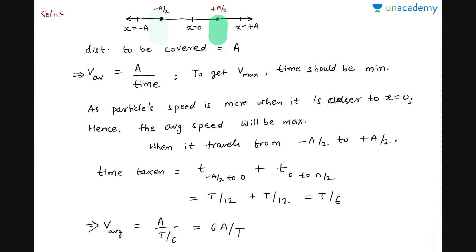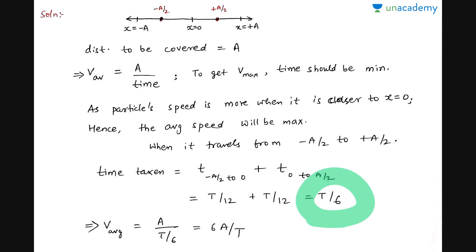From −A/2 to 0 takes T/12 time, and from 0 to A/2 also takes T/12 time — I hope you remember this. From 0 to A/2 takes T/12, and from A/2 to A takes T/6. So from −A/2 to +A/2, total time is T/6. Total distance is A, so average speed = 6A/T. That's your answer.